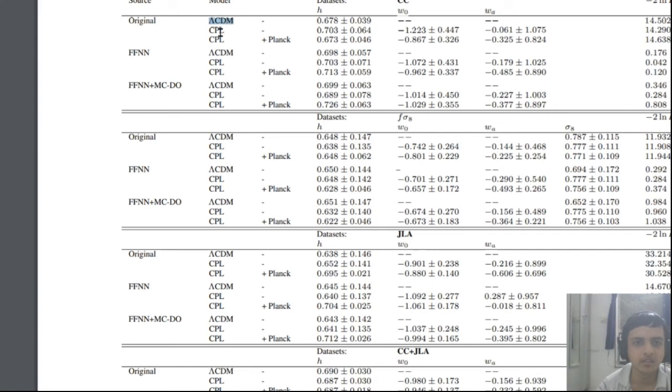The model that they used was Lambda CDM, CPL and so on, and the feed forward network and feed forward network plus Monte Carlo. They compared three kinds of models and then they had the covariance matrix just to see if all these values are matching or not.